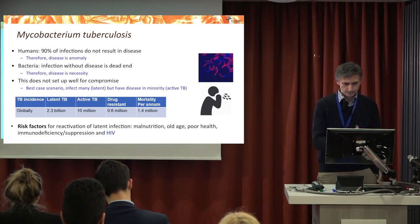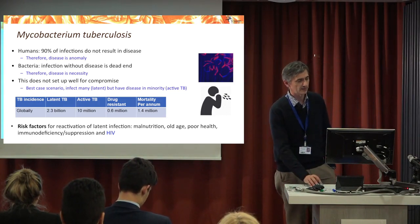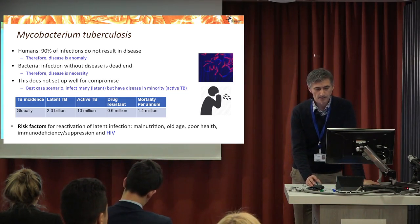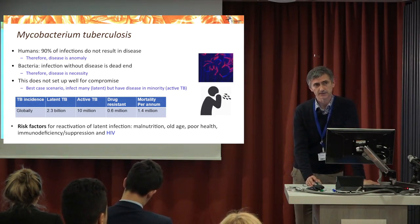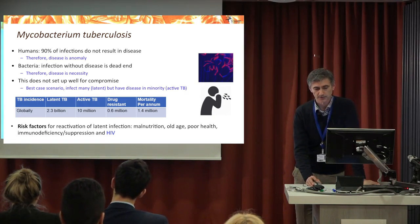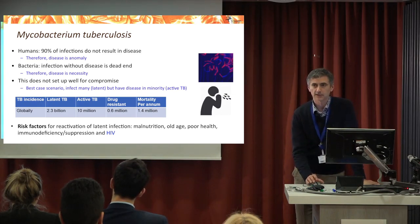TB is a bacterial infection transmitted quite easily by aerosol. It's a respiratory disease, meaning it can be transmitted by coughing and sneezing. These red rods are acid-fast stained bacteria — this is a particular stain that identifies TB bacteria. You will have an opportunity to see these bacteria under the microscope after the talks.